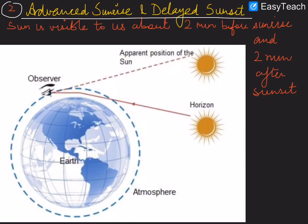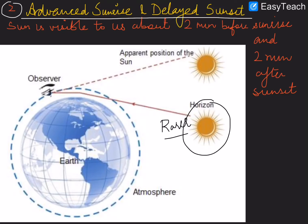The second example of atmospheric refraction is advanced sunrise and delayed sunset. The sun is visible to us about two minutes before actual sunrise and two minutes after actual sunset — a total difference of four minutes. As shown in the diagram, the actual position of the sun is below the horizon before sunrise, but because the higher atmosphere has a lower refractive index (rarer) and the layers close to Earth's surface are denser with a higher refractive index, refraction shifts the apparent position.